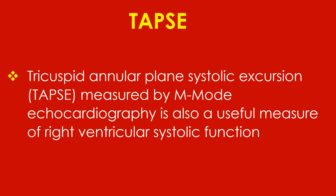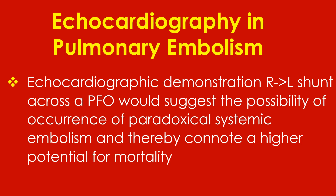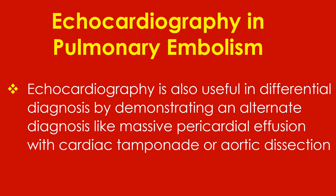Tricuspid annular plane systolic excursion (TAPSE), measured by M-mode echocardiography, is also a useful measure of right ventricular systolic function. Echocardiographic demonstration of right ventricular shunt across a patent foramen ovale would suggest the possibility of paradoxical systemic embolism and thereby connote a higher potential for mortality. Echocardiography is also useful in differential diagnosis by demonstrating an alternate diagnosis like massive pericardial effusion with cardiac tamponade or aortic dissection.